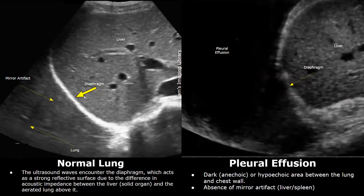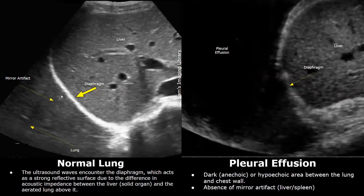This is the liver. This bright hyperechoic line is the diaphragm. This is the air-filled lung — we see mixed echoes above the diaphragm. We actually see a mirror artifact: a mirror image of the liver is seen above the diaphragm. It is more pronounced on the right side; on the left side it is not as clearly seen because of the spleen — the spleen's mirror artifact is less clear compared to the liver.